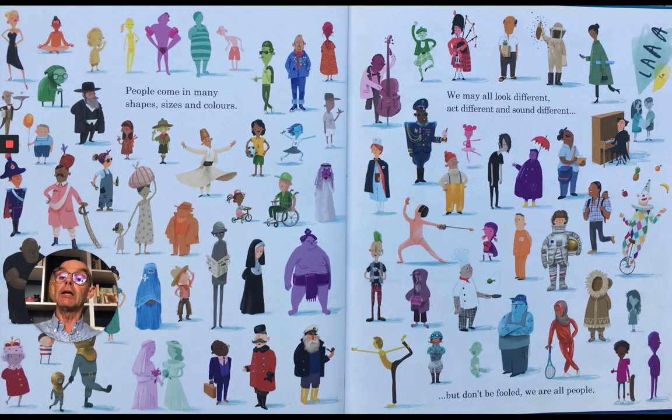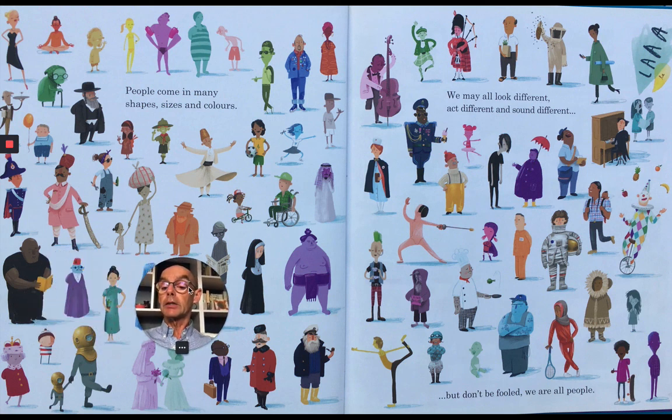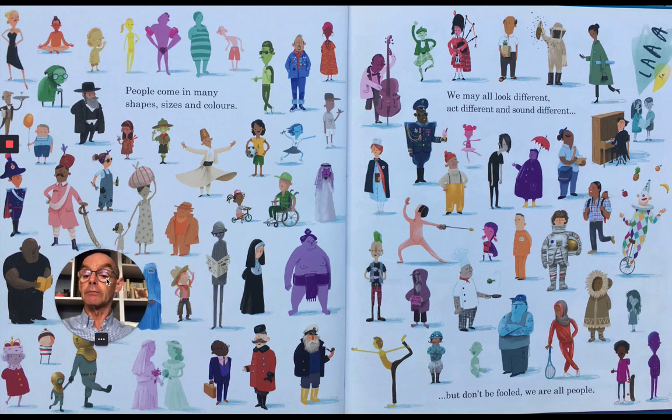People come in many shapes, sizes and colours. We may all look different, act different and sound different. But don't be fooled. We are all people. Well, there are lots of different kinds of people there. Some small, some short, some tall, some thin, some fat, some in funny clothes, some with swords or instruments. Lots of things to look at on that page. That looks fun.